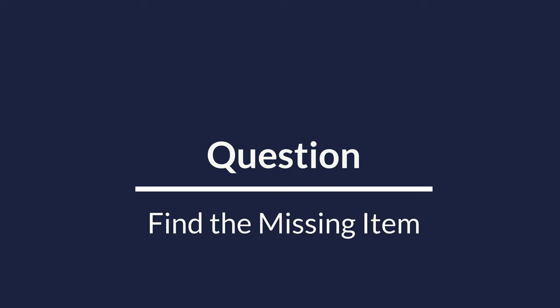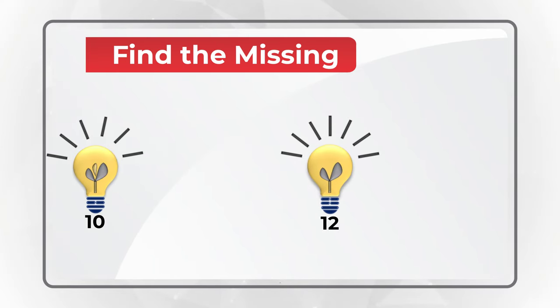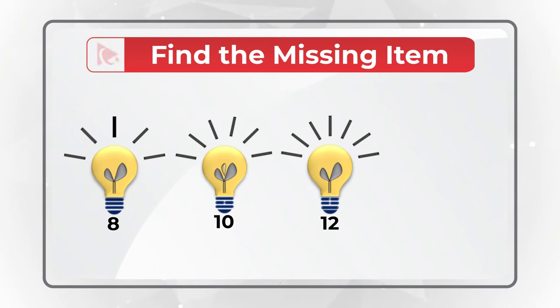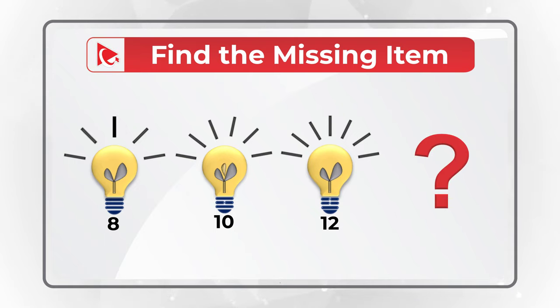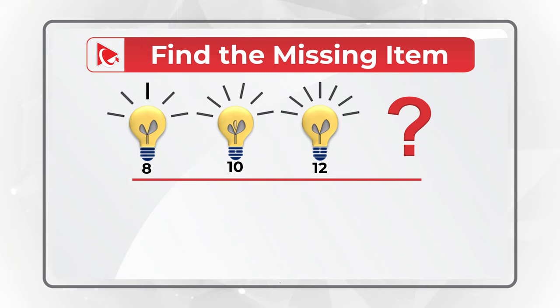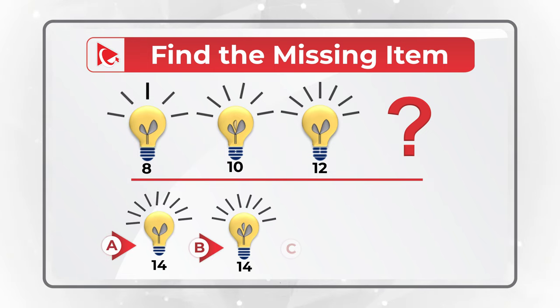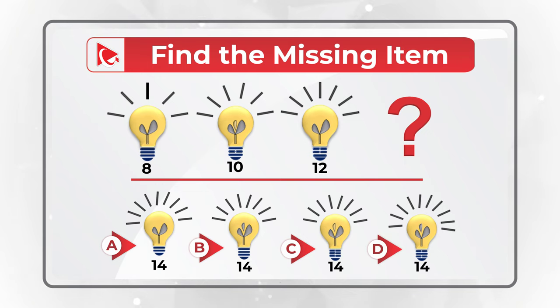Here's an amazing question to help you find the missing item. You're presented with a sequence of bulbs. There are three bulbs visible, and the fourth bulb is missing. You need to select the missing bulb out of four different choices: A, B, C, and D. Take a close look to see if you can come up with the answer.